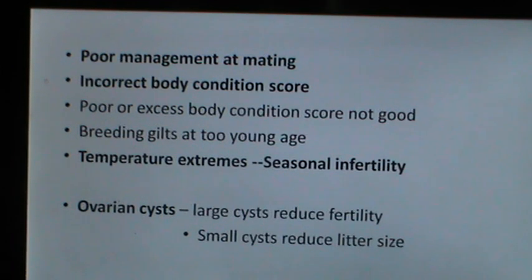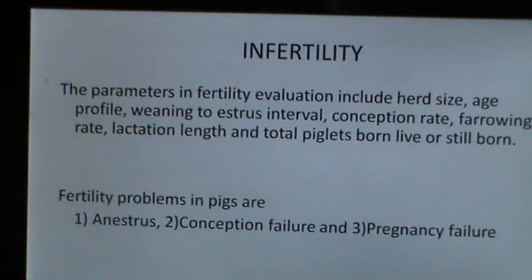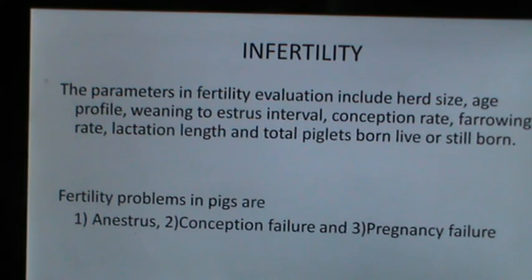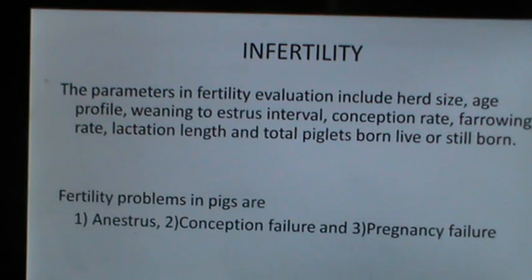Ovarian cysts may sometimes cause infertility or sub-fertility in swine herds. Large cysts reduce fertility and small cysts reduce litter size. Parameters in infertility evaluation include herd size, age profile, weaning-to-estrus interval, conception rate, farrowing rate, lactation length, and total piglets born live or stillborn. Fertility problems in pigs are classified as anestrus, conception failure, and pregnancy failure.